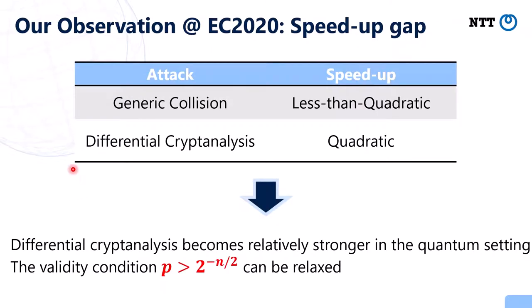The situation can be summarized as follows: for generic collision attacks, we can always obtain less than quadratic speedup. But for differential cryptanalysis, we can obtain a quadratic speedup by using Grover search. So differential cryptanalysis becomes relatively stronger in the quantum setting. This implies that the validity condition — p greater than 2 to the power minus n over 2 — can be relaxed in the quantum setting.